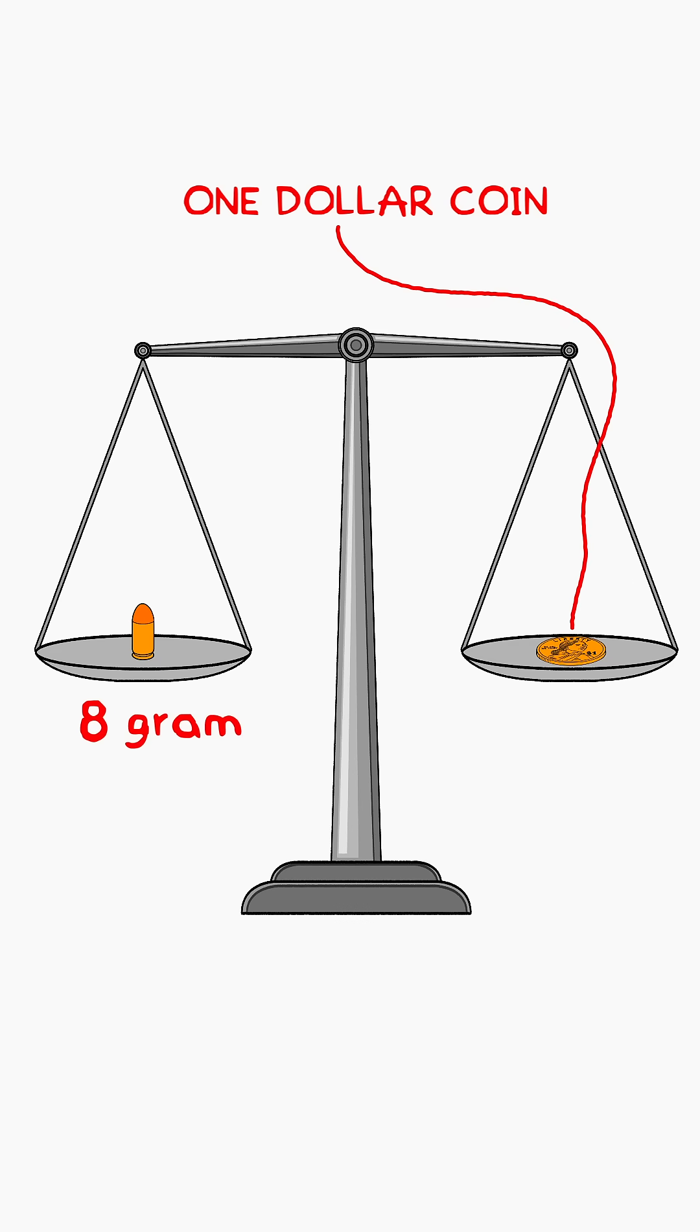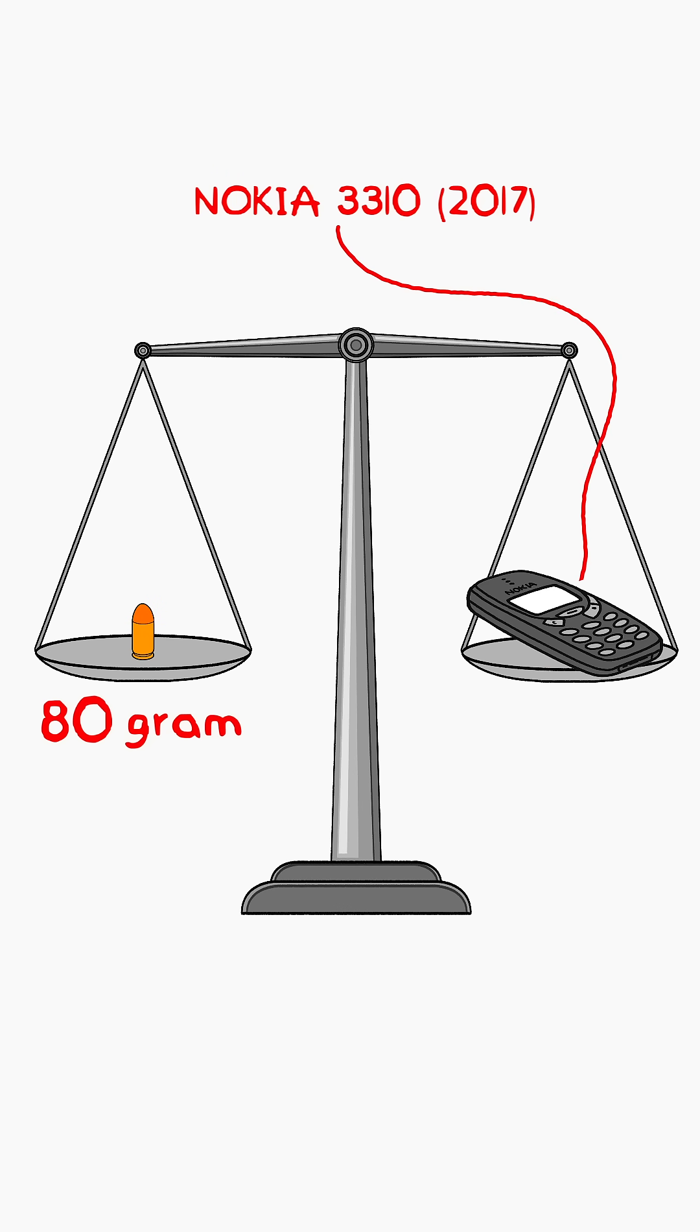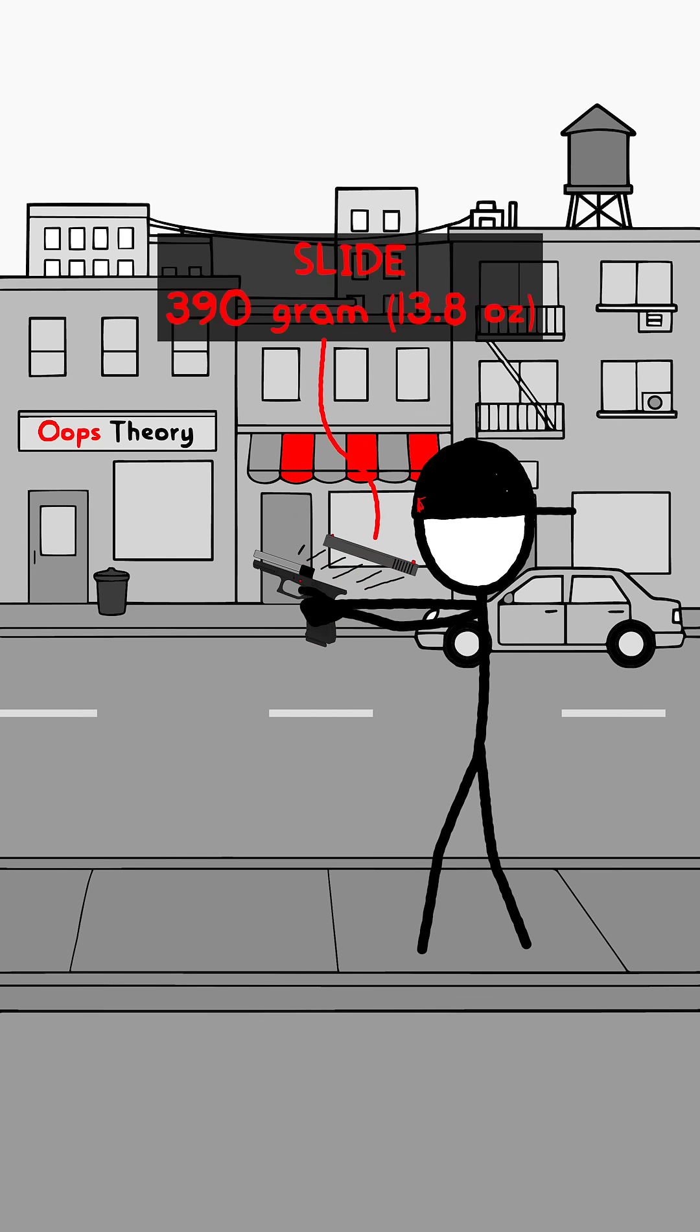Now we increase its mass to 80 grams, and that's already the weight of the legendary Nokia 3310, pushed to supersonic speed. First of all, the recoil impulse will jump from 3 to 31 kilograms per meter per second. During the shot, the 390 gram slide will tear off and fly backward at about 80 meters per second.